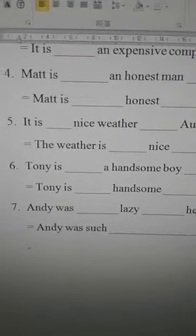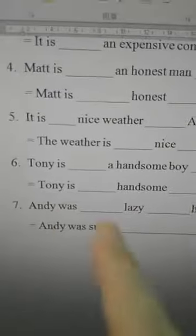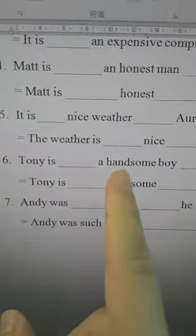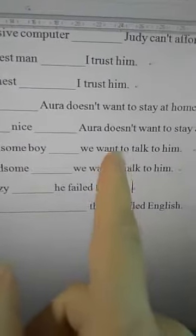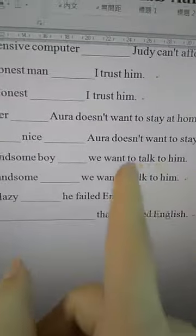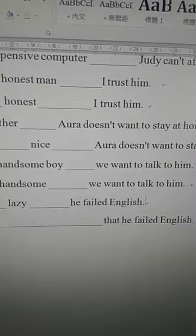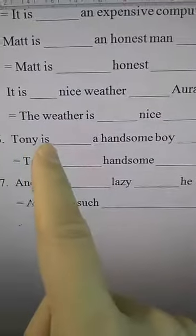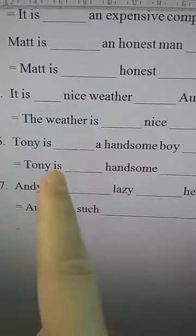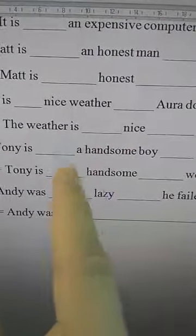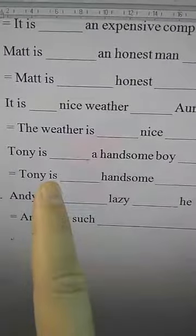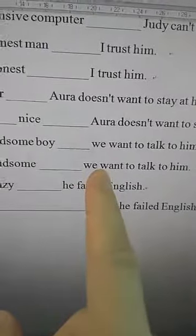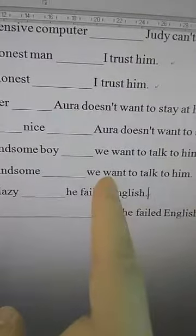Number six: 'Tony is ___ a handsome boy ___ we want to talk to him.' It's a noun, so we use 'such': 'Tony is such a handsome boy that we want to talk to him.' The equivalent: 'Tony is ___ handsome ___ we want to talk to him.' 'Handsome' is an adjective, so we use 'so': 'Tony is so handsome that we want to talk to him.' Check: 'we want to talk to him' is a complete sentence — correct.